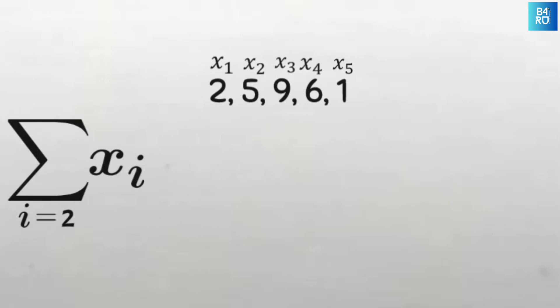Now one last example. Summation from i equals 2 to 4 of x sub i. This will be 5 plus 9 plus 6 equals 20.